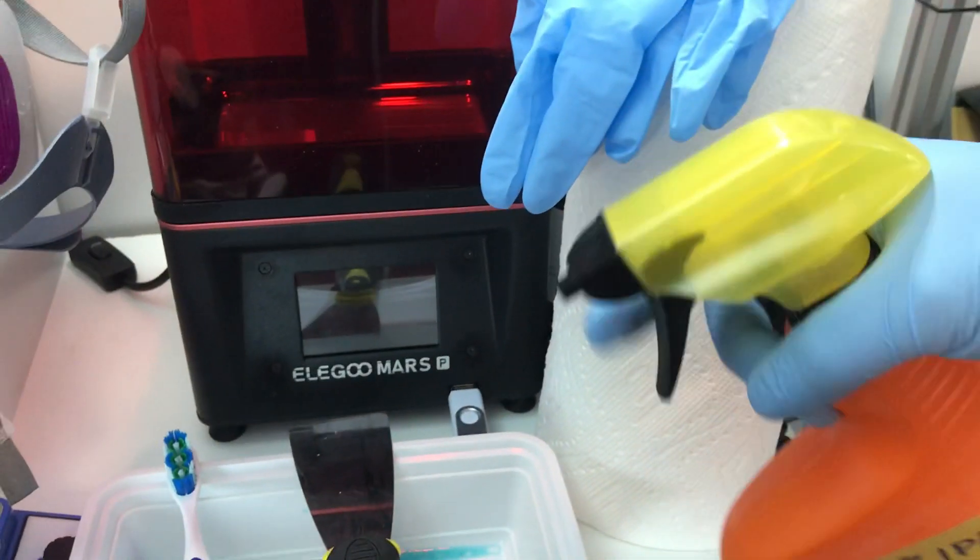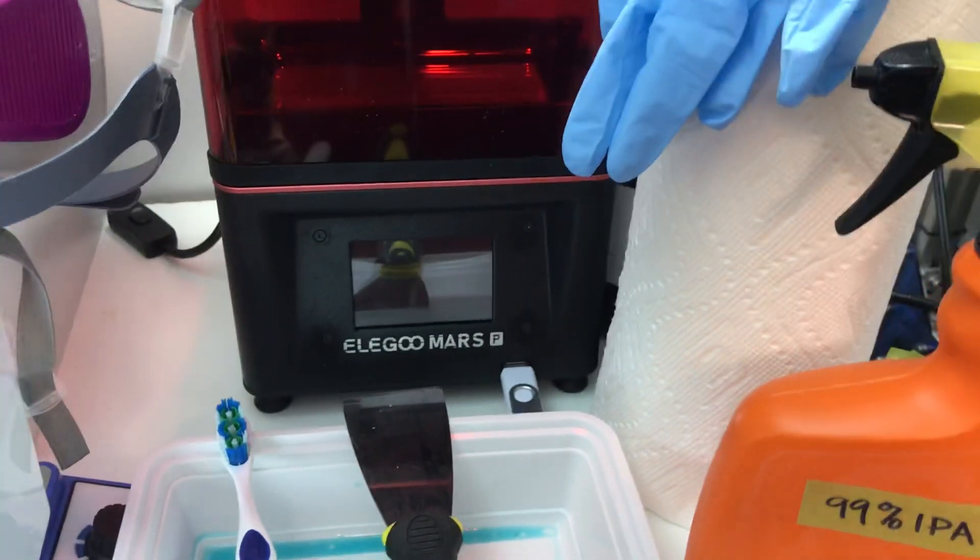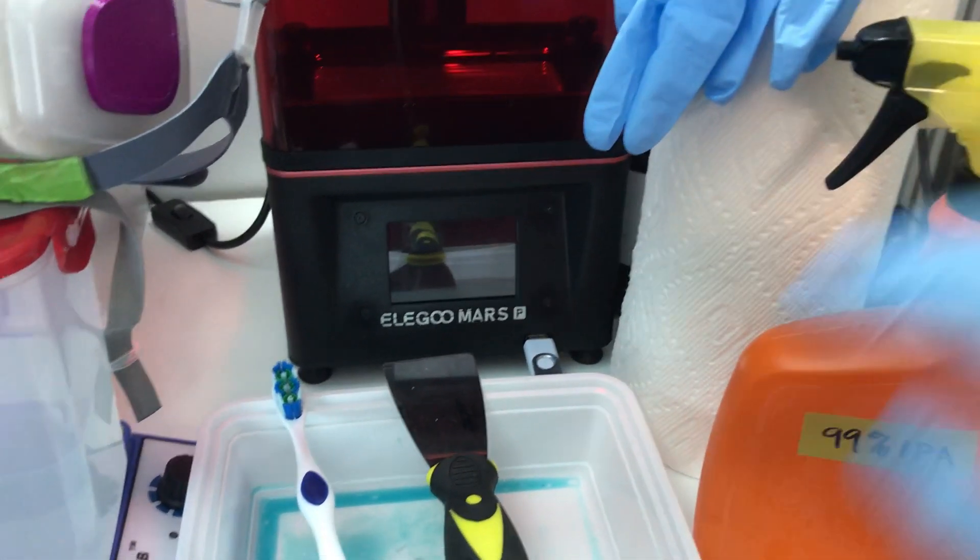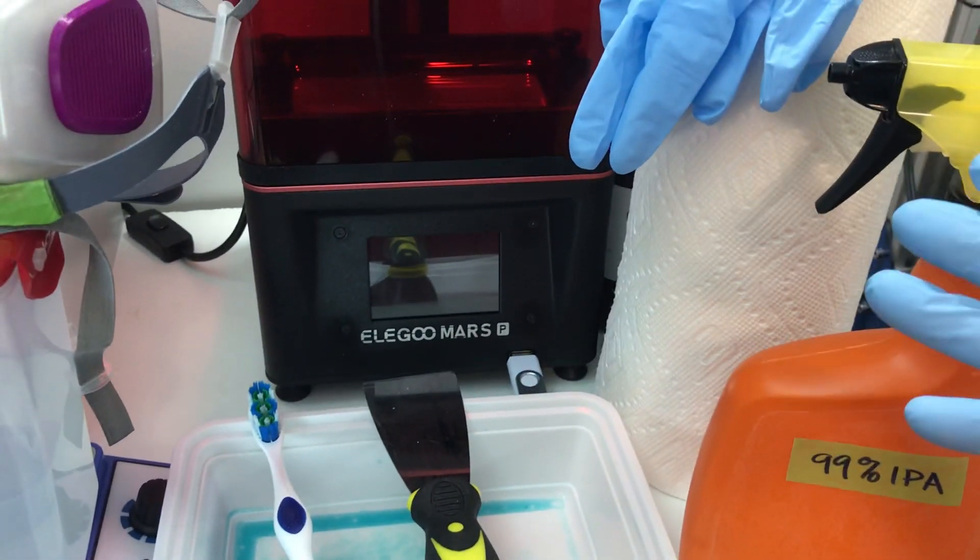Then I do it again—give the bed another spray, and I wipe the whole bed with a piece of paper towel. The model now has most of the resin off.